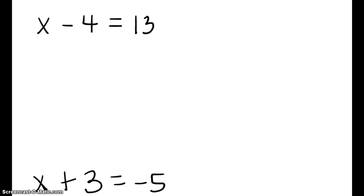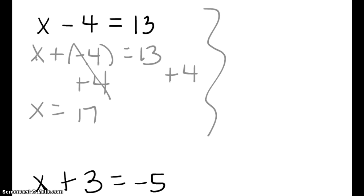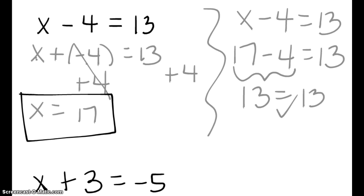Let's try these problems. x minus 4 equals 13. Rewrite it as x plus negative 4 equals 13. I'm worried about the left side. How do I get rid of those 4 negatives? I have to zero them out with 4 positives, so 4 positives on the right as well. Those zero out, and x equals 13 plus 4, which is 17. Let's rewrite to check: x minus 4 equals 13 becomes 17 minus 4 equals 13. What is 17 minus 4? It is 13. Does that have equal weight as 13? Yes. Go back and box your final answer.